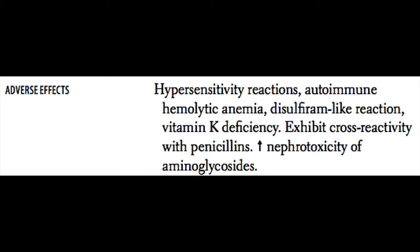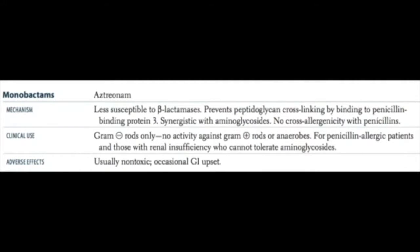The next cell wall antibiotic is aztreonam. It's structurally a little bit different — it does not have a beta-lactam ring. It is what we call a monobactam and is therefore resistant to beta-lactamase. It is also synergistic with aminoglycosides, which is something important to know. It is a very narrow spectrum drug — only for gram negatives. It does not cover gram positives, and it does not cover anaerobes. It is generally well tolerated in terms of side effects.